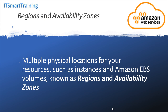Next is Regions and Availability Zones. We already discussed this in a previous video. Multiple physical locations of your resources, such as instances and Amazon EBS volumes, are known as Regions and Availability Zones. Regions refer to where the data centers are located, and Availability Zones are the specific data centers where they are exactly located.